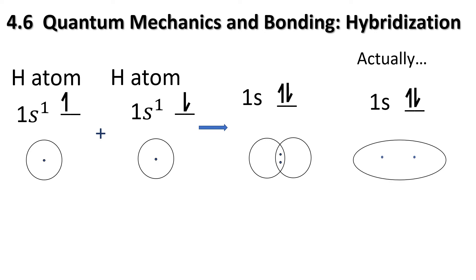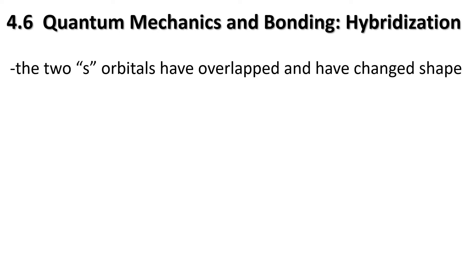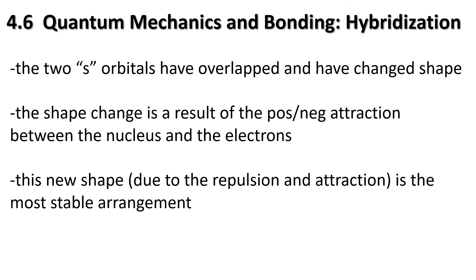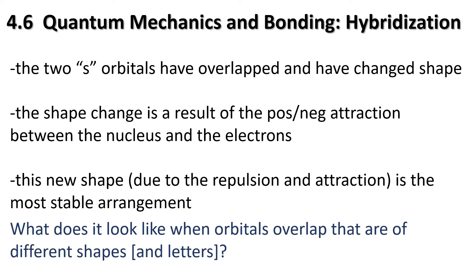What's actually happened is a different shape is formed - more of an oval. This is where hybridization comes from: a change in the shape of the orbital after it has overlapped. The shape change is a result of the positive and negative attraction between the nucleus and the electrons. This new shape, due to repulsion and attraction, is the most stable arrangement.